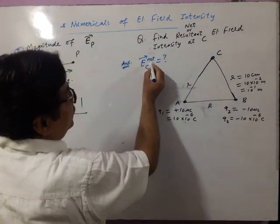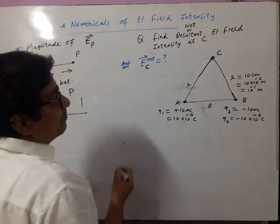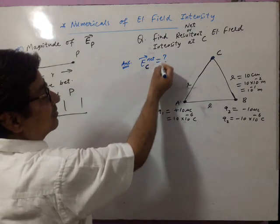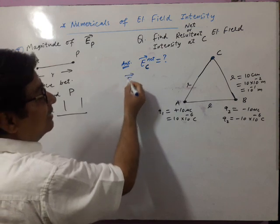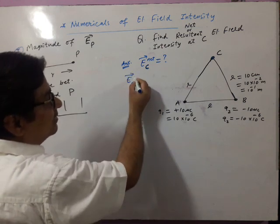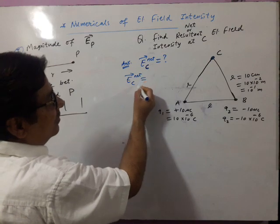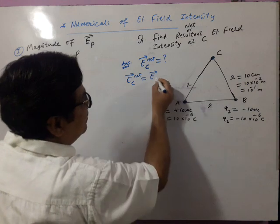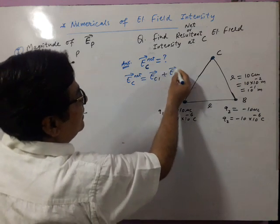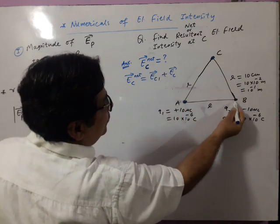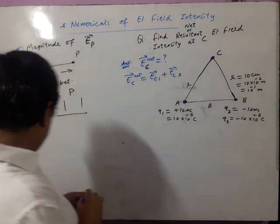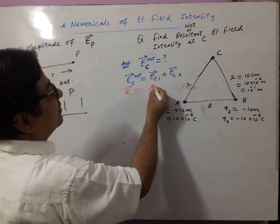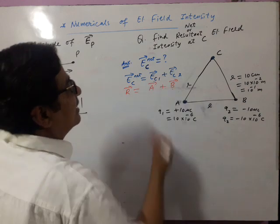We want to find net or resultant electric field intensity at C. Remember, as in Coulomb's law numericals, it is a vector quantity. So you will have to write in vector notation: electric field at C net is equal to electric field at C due to Q1 plus electric field at C due to Q2. As per parallelogram law, it is like a resultant vector — it is like A vector and B vector.